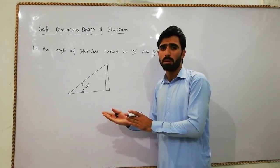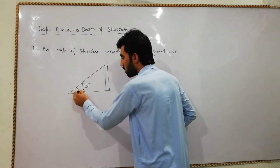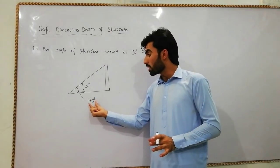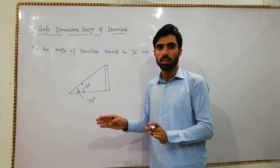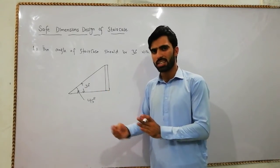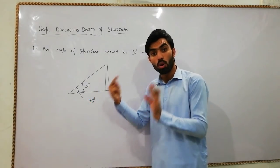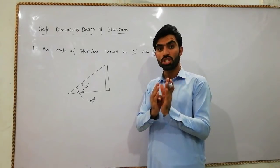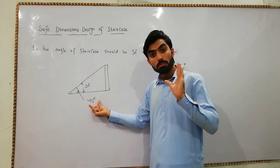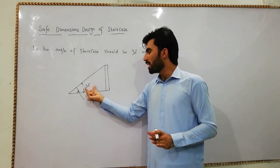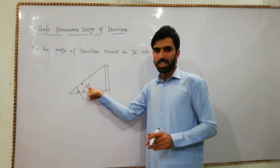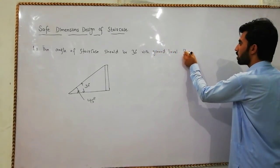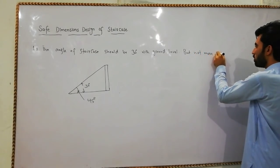Sometimes the horizontal length is insufficient or there is a height problem, so the angle may need to be increased. In that case, the angle should not be more than 45 degrees. If it exceeds 45 degrees, the staircase will be too difficult for people using it. So the standard is 30 degrees, but it should never exceed 45 degrees.